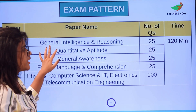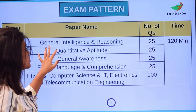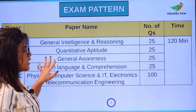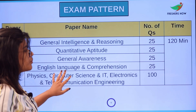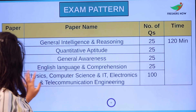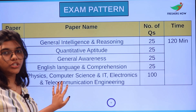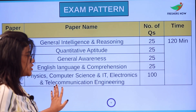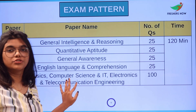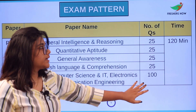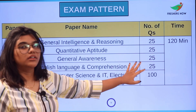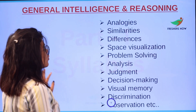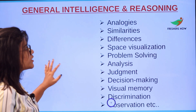You have the option to choose any one from the above three papers in Part 2. The examination pattern is as follows: in Part 1 there is General Intelligence and Reasoning with 25 questions, Quantitative Aptitude with 25 questions, General Awareness with 25 questions, and English Language and Comprehension with 25 questions. Part 2, according to the subject you choose — Physics, Computer Science, or Electronics and Telecommunications — will carry 100 questions. The time limit is 120 minutes.